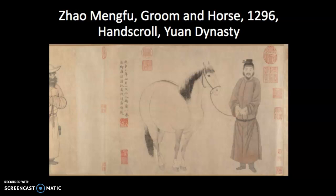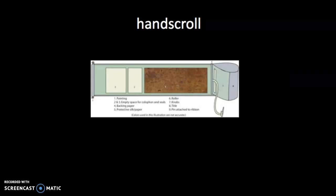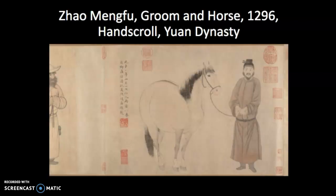This is Zhao Mengfu's Groom and Horse from the early decades of the Yuan Dynasty. This is what is known as a hand scroll — an ink and water-based colors on paper work that generally includes the seals of the maker. Any future owner also adds his inscription, and this history of ownership is known as the colophon. It's not just a singular work of art, but also a record of who has owned it — sometimes with added commentary from future owners. We can really understand these hand scrolls as a kind of living work of art.